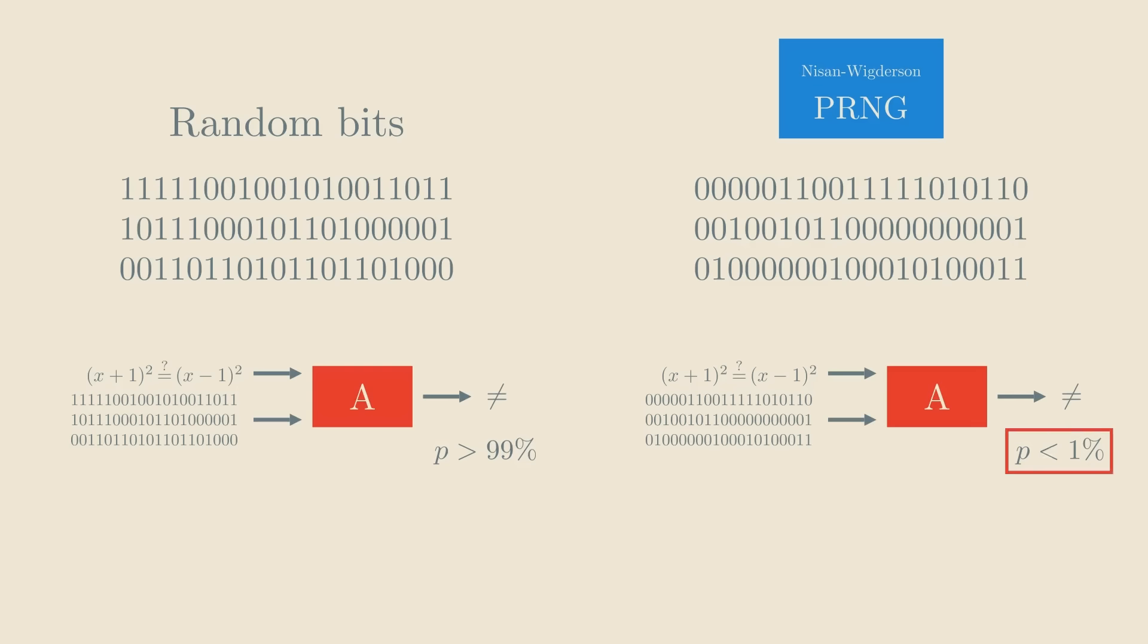Therefore, for any algorithm in BPP, these pseudorandom bits must be good enough. So after all this hard work, we've proven that if we start with a randomized algorithm that succeeds with a 99% probability, we can run it with pseudorandom bits, and it'll still succeed at least 1% of the time.